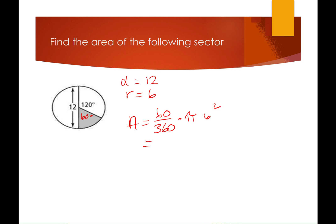So 60 over 360 reduces to 1/6. I'm going to double check because you guys know me and my arithmetic. Okay, so I've got 1/6 times 36π, and that simplifies to 6π.